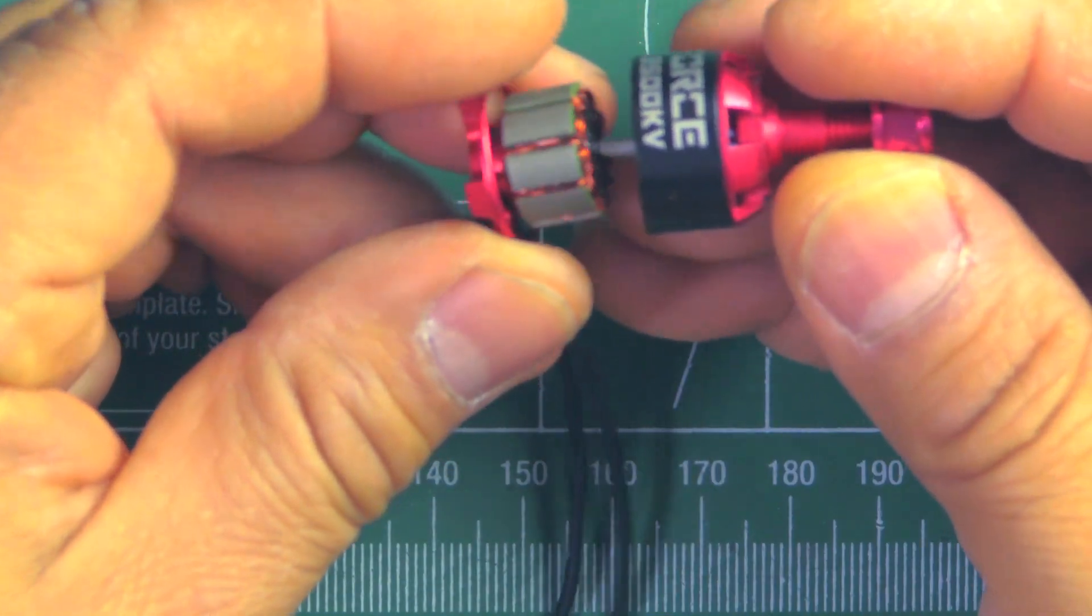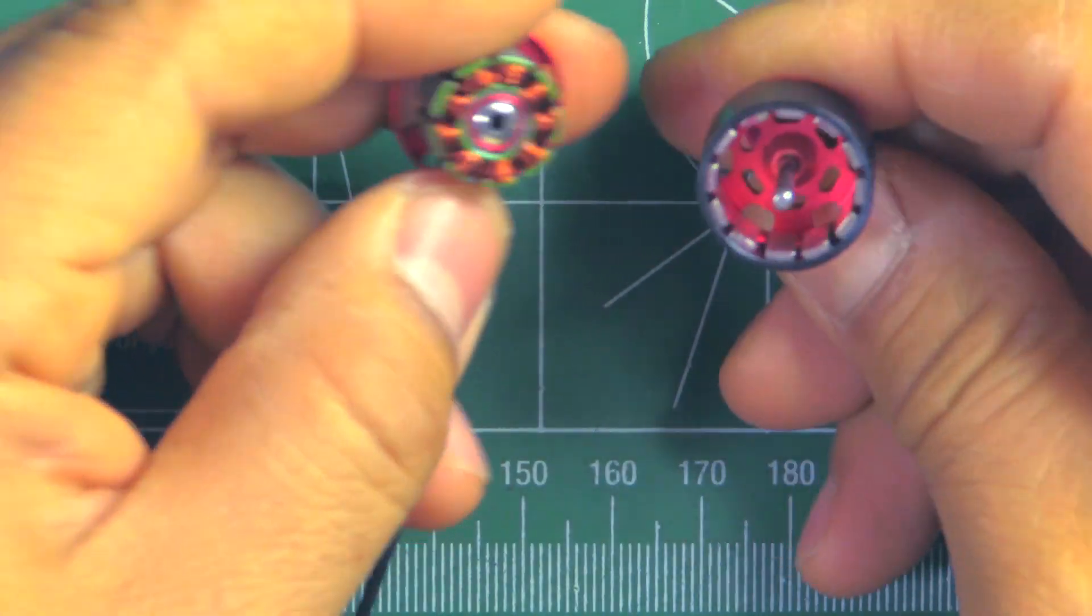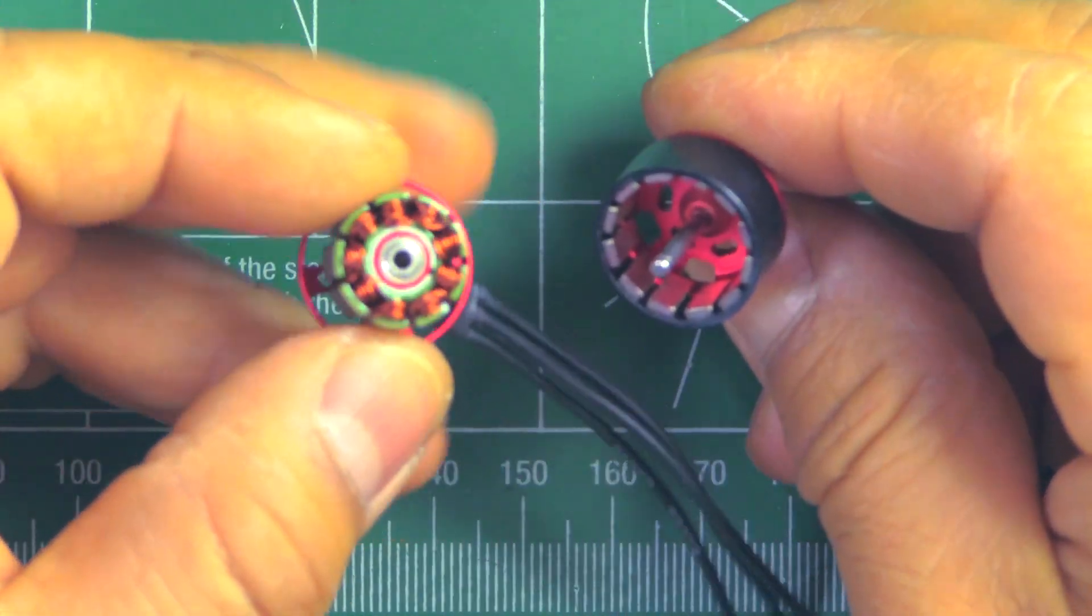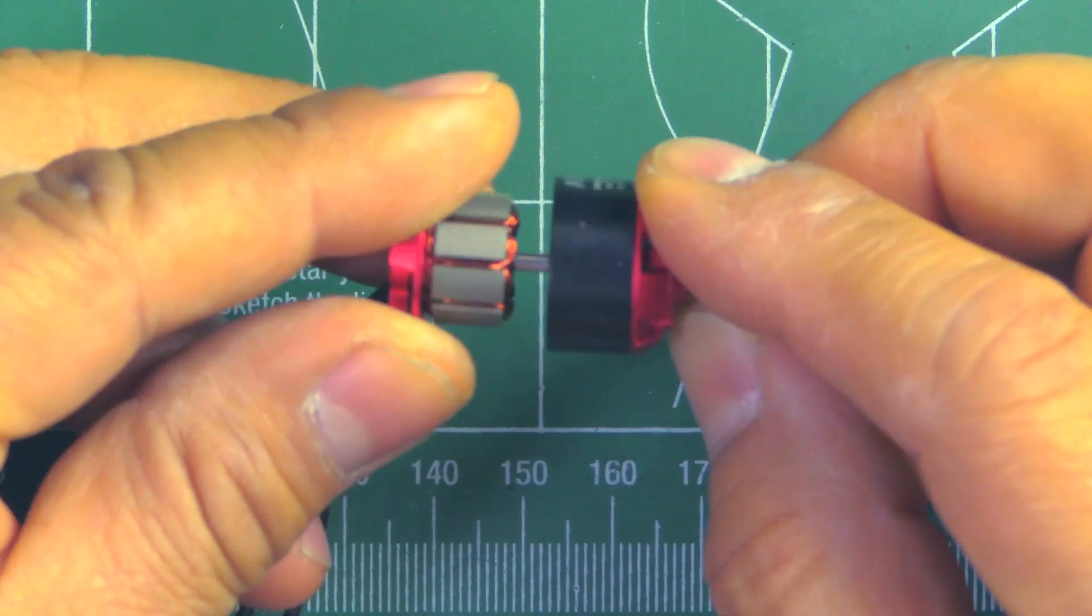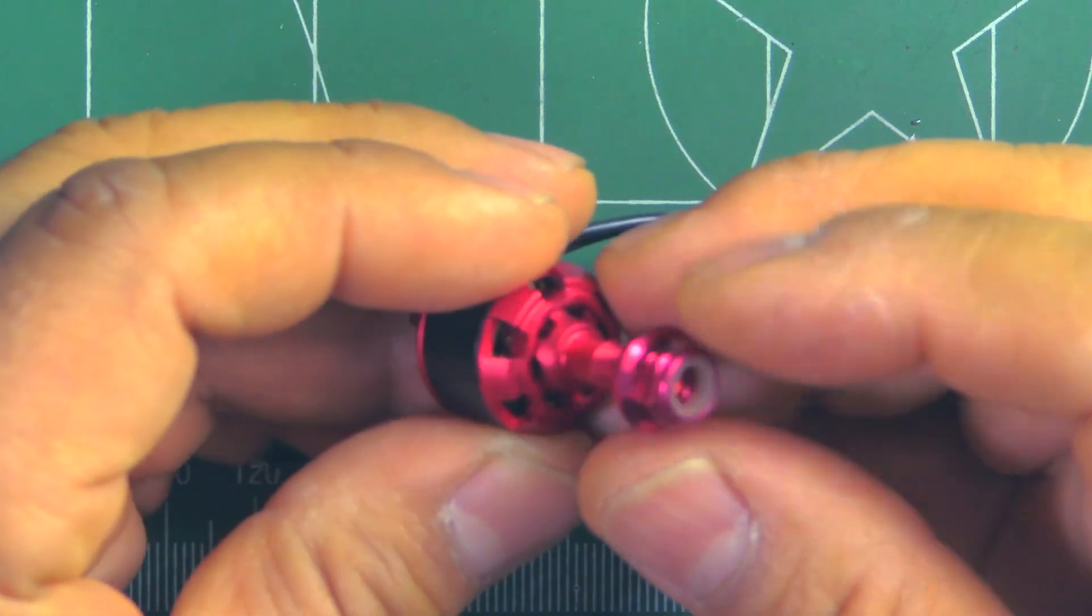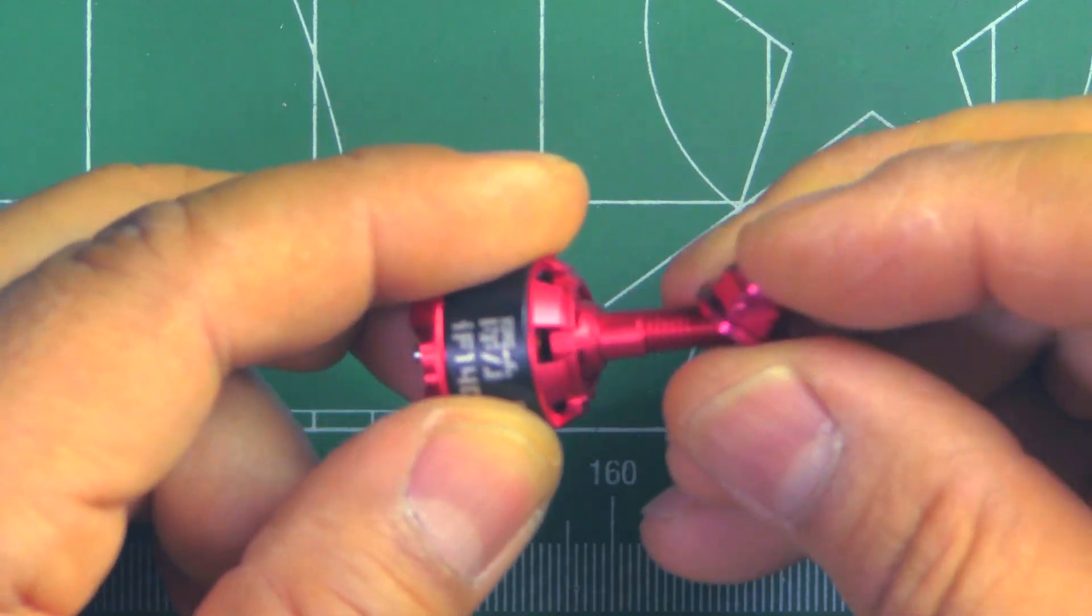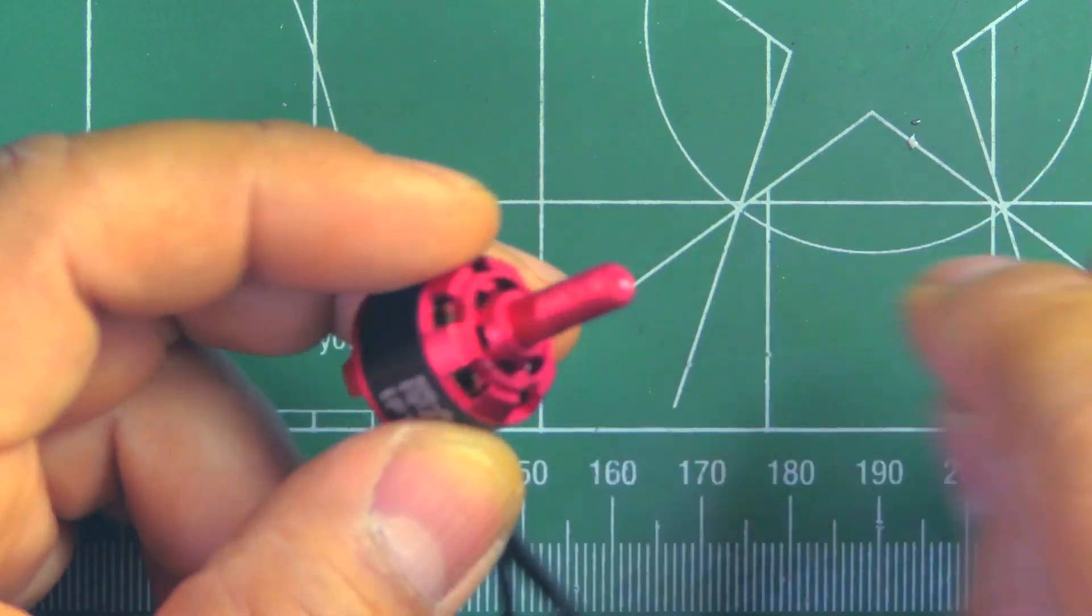Other than that, the build looks pretty solid, nothing out of the ordinary here. These do come in CCW and CW thread, so this one is reverse thread.